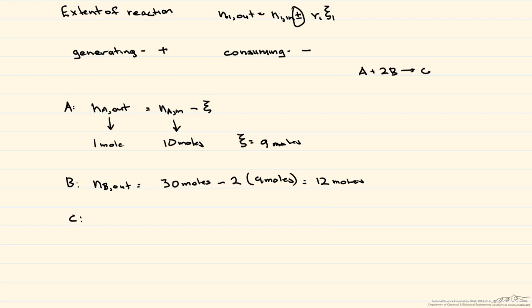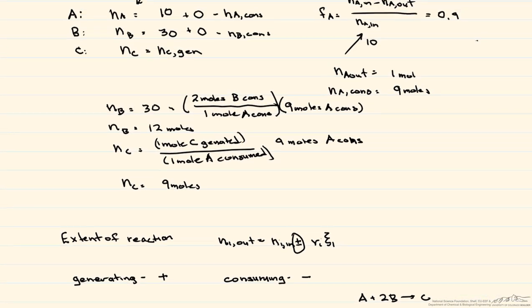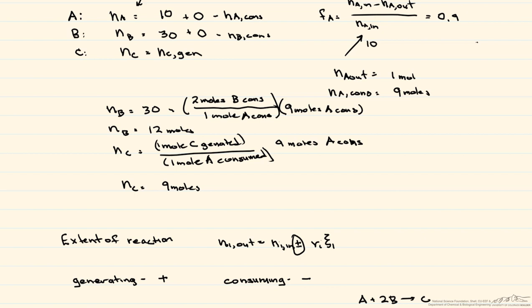For N_C_out: nothing comes in, it's positive because we're generating, so N_C_out equals ξ equals 9 moles. Comparing these results to those from the molecular species balance, we get exactly the same numbers.